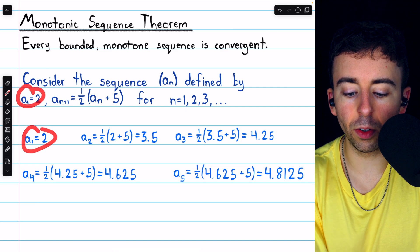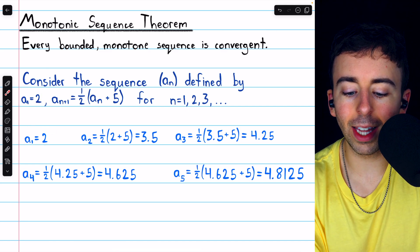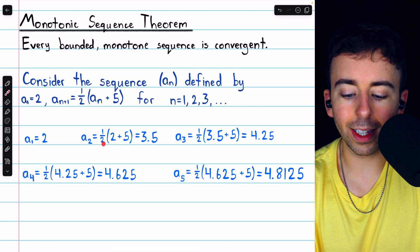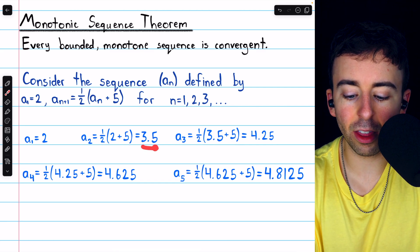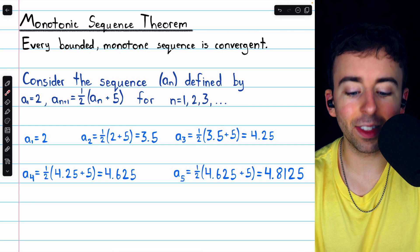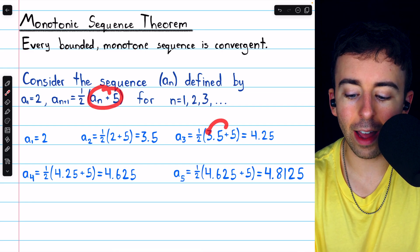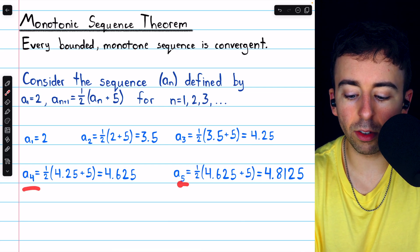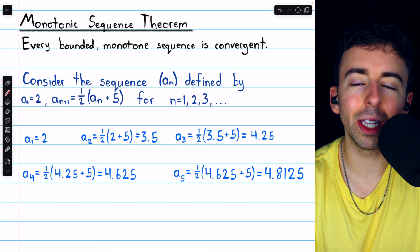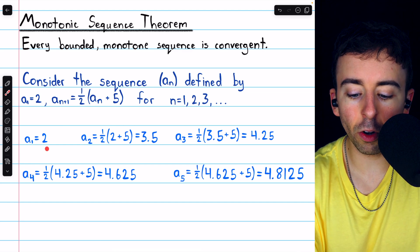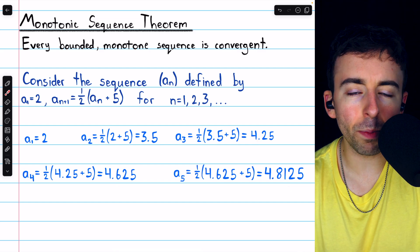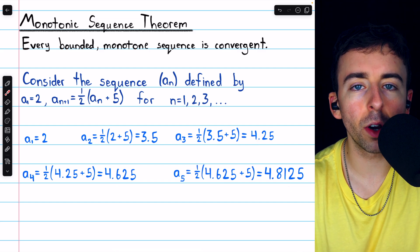The first term is 2. The second term is calculated by adding 5 to the previous term — so 5 plus 2 — and then multiplying that by one half, which gives us 3.5. To get the next term, we add 5 to 3.5 and then multiply that by one half, which is 4.25. We could continue in this way, computing as many terms as we like. You may notice the terms appear to be increasing, and it also appears that they may be approaching 5.